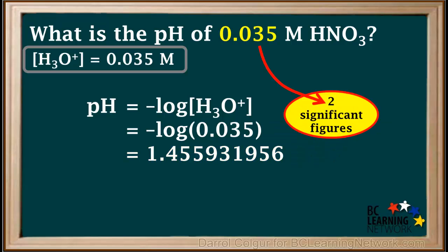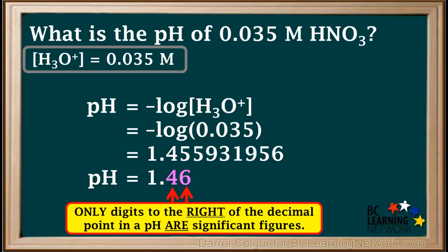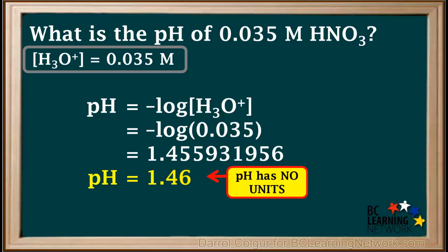How do we round this off? The concentration given has two significant figures, so we round our answer to two significant figures. For a pH value, only the digits after the decimal point are counted as significant figures. Rounding to two significant figures gives us 1.46 for pH. The 1 to the left of the decimal is not a significant figure; only the 4 and the 6 to the right of the decimal are significant figures. Note that pH values are expressed without any units.